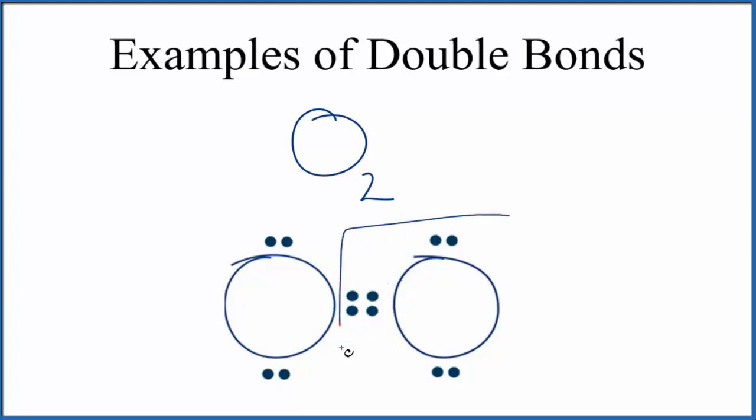Because now this oxygen here has a total of eight valence electrons. That's an octet that's very stable. This oxygen here also has a total of eight valence electrons, and that's because we formed this double bond here. So oxygen, that's a really good example of a double bond.